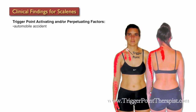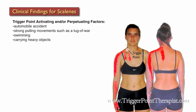Some factors that may activate or perpetuate trigger points in the scalene muscles include automobile accidents, strong pulling movements such as playing tug of war, swimming, carrying heavy objects, coughing, scoliosis or lower limb length inequality, and limping because it causes a distortion in the client's posture.